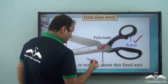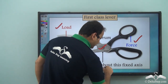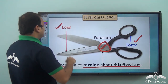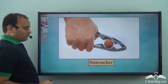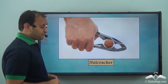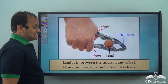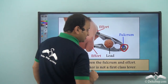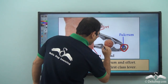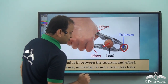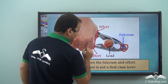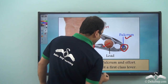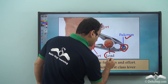The fulcrum allows rotation or turning about a fixed axis. In scissors, the fulcrum is located here in the middle. In a nutcracker, the fulcrum is here — this is the fixed point about which it moves — while the load, the nut, is placed here in the middle, and you apply effort on this side. So you have effort here, fulcrum here, and load in the middle.